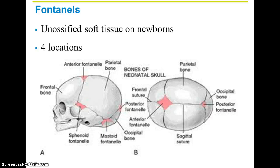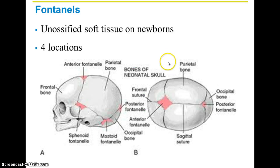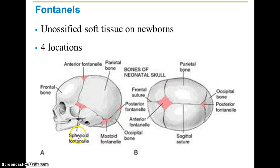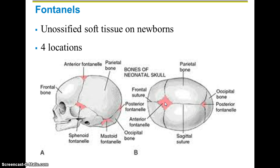There are four fontanelles: the sphenoid, mastoid, anterior, and posterior. The anterior one on top of the skull is the most delicate and also the largest. This is why mothers are so cautious of this soft spot — directly right under there is the brain, so it's very important to be careful of those locations.